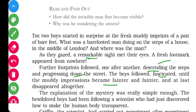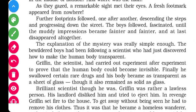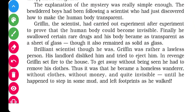The explanation of this mystery was really simple. The bewildered boys had been following a scientist who had just discovered how to make the human body transparent. The scientist's name was Griffin, and he had carried out experiment after experiment to prove that the human body could become invisible. It was the effect of that experiment only.